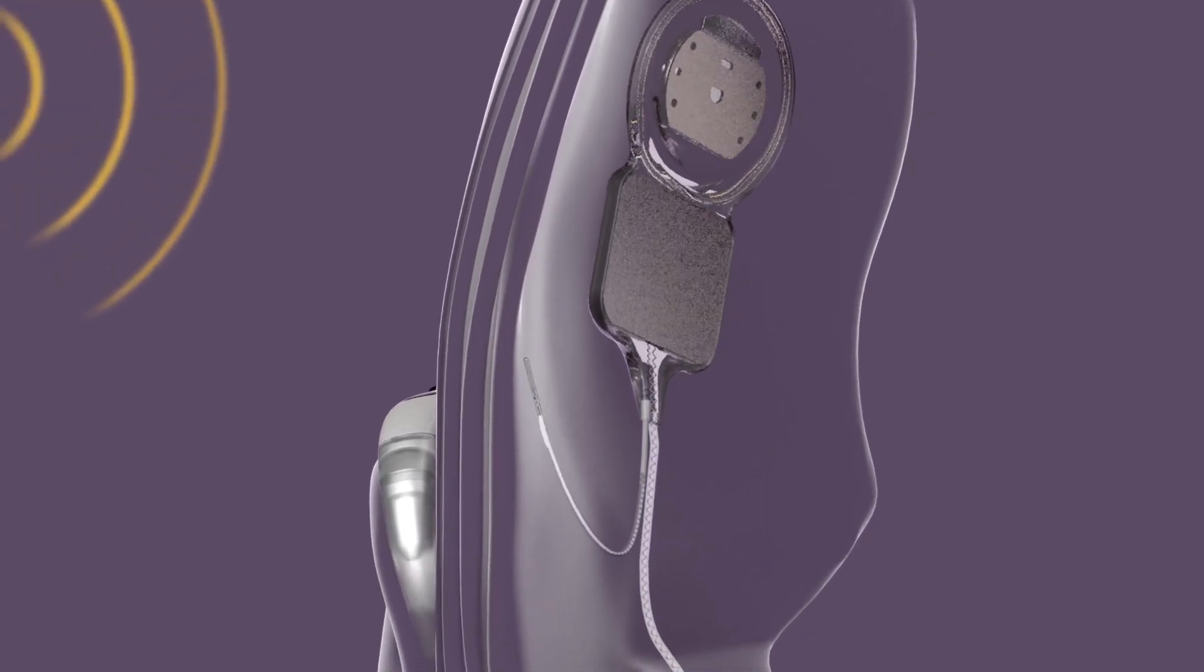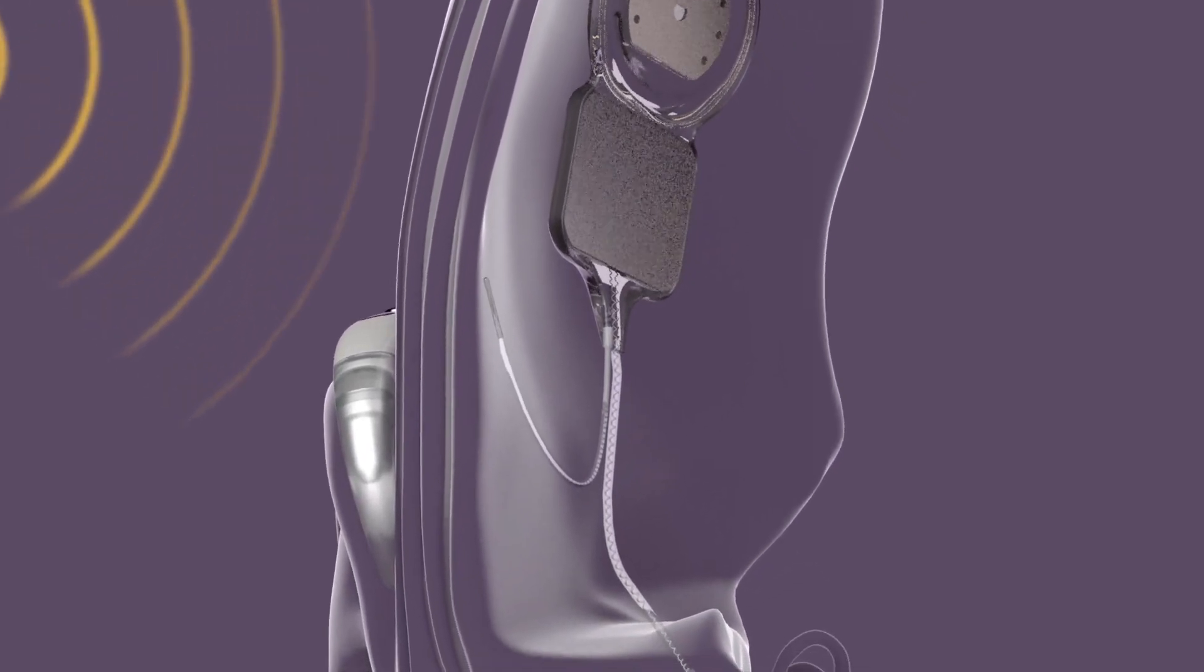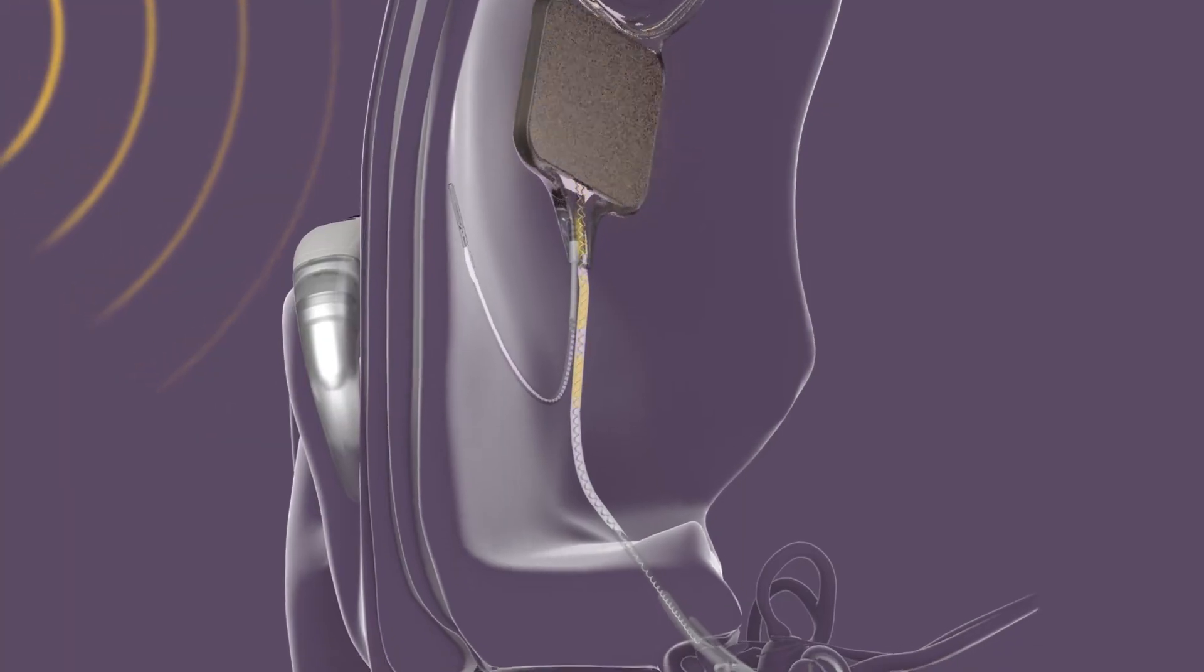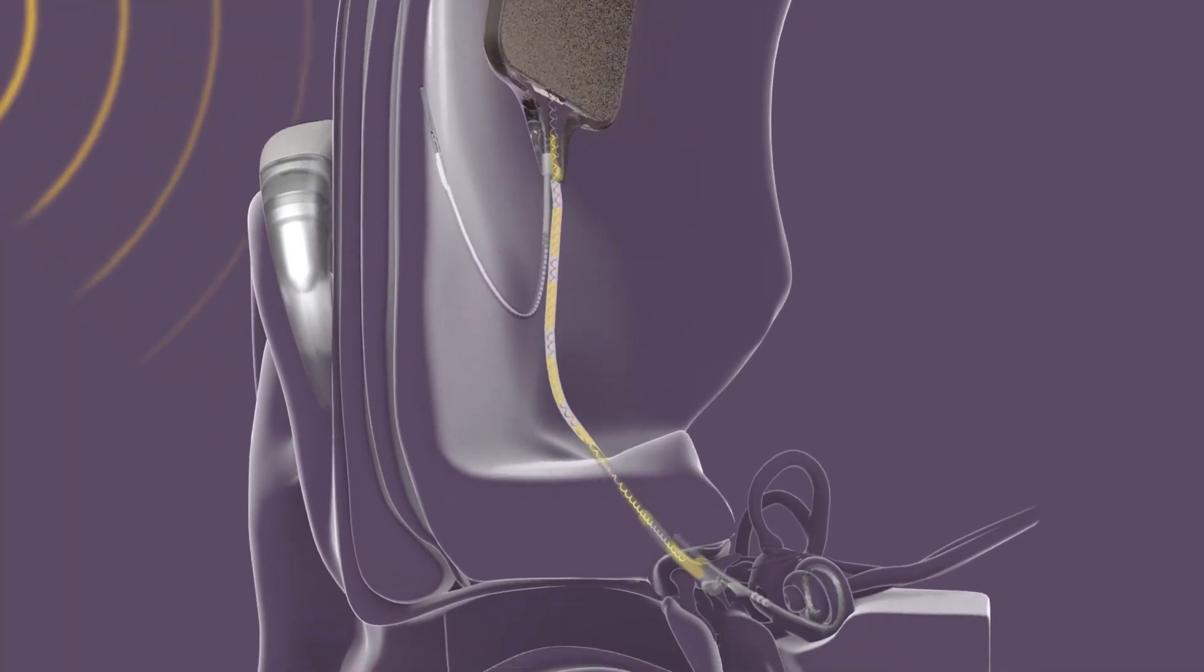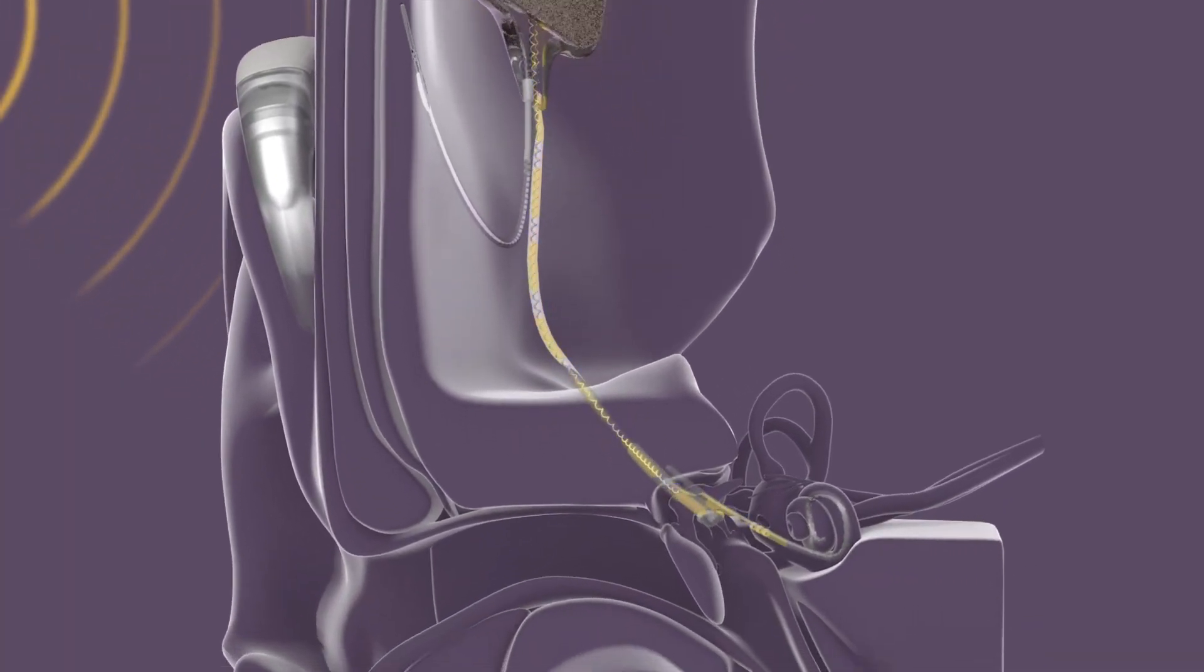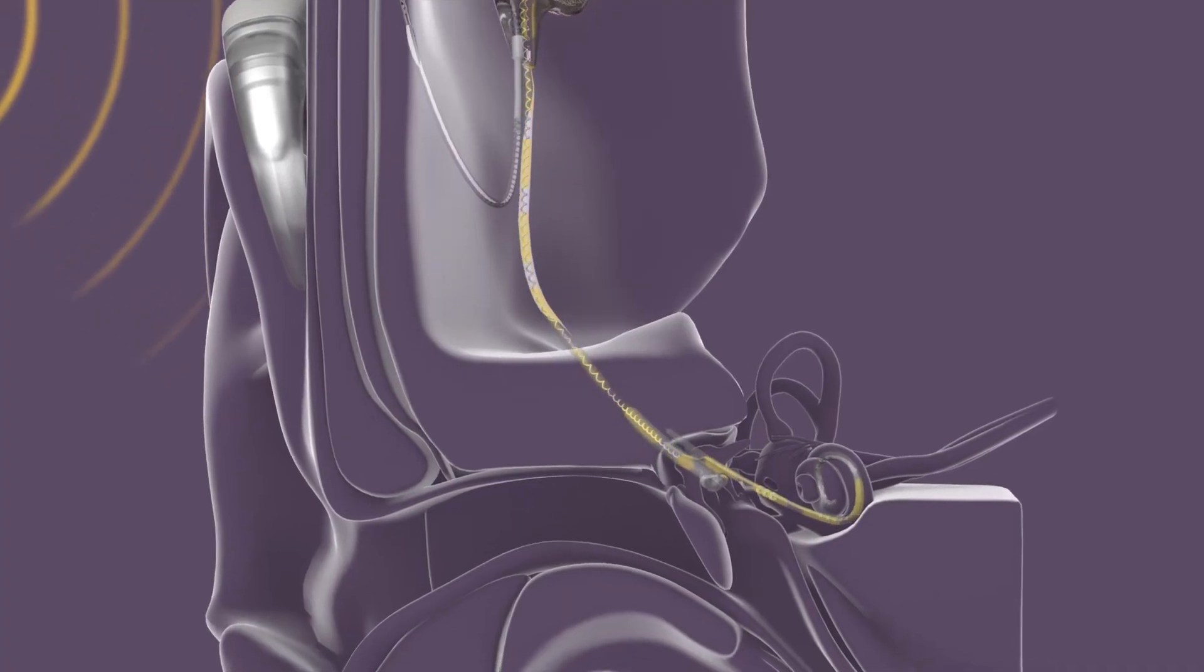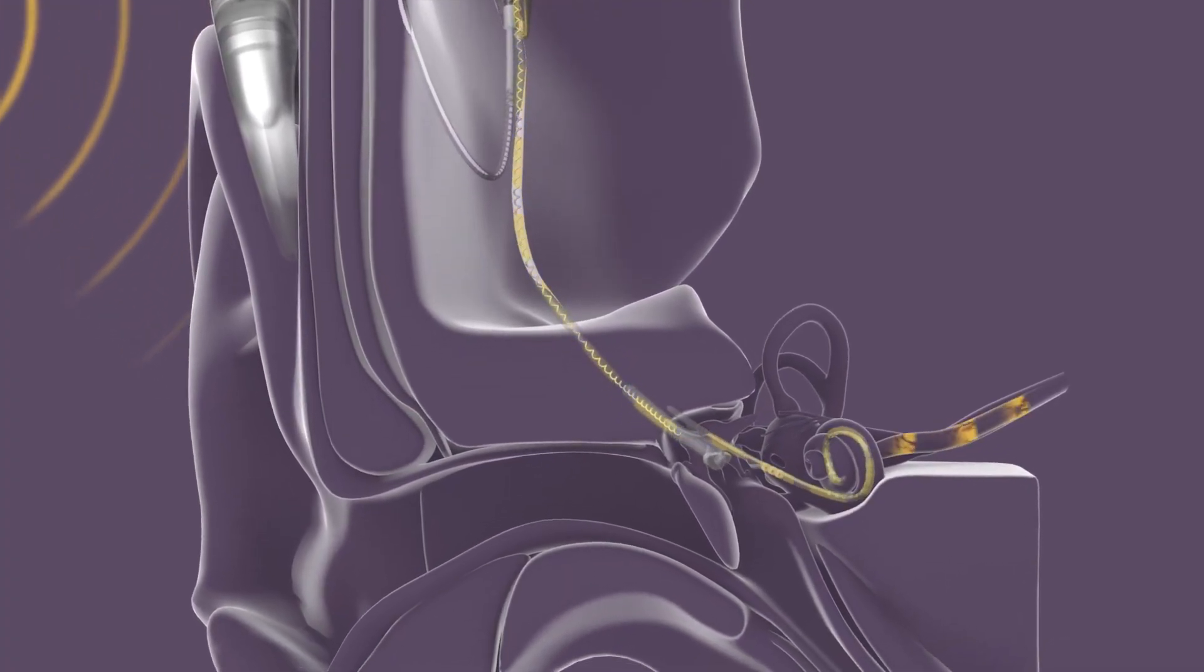Sound is picked up by two microphones on the sound processor and sent to the implant, where it's converted into signals that are sent into the cochlea via the electrode and are interpreted by the brain as the sounds you hear.